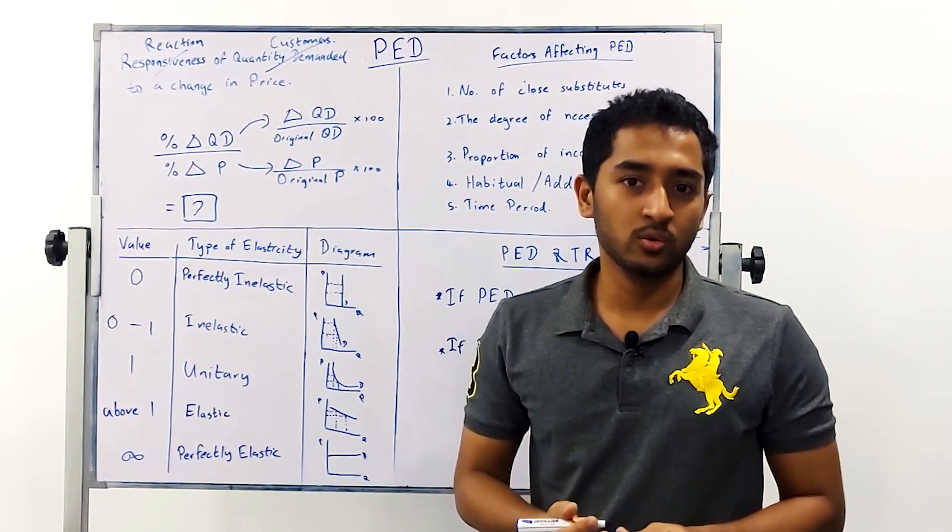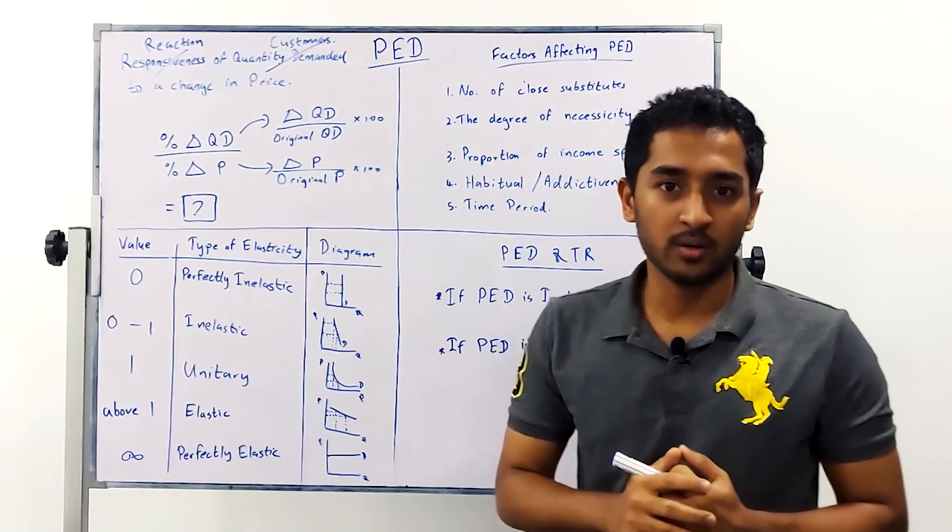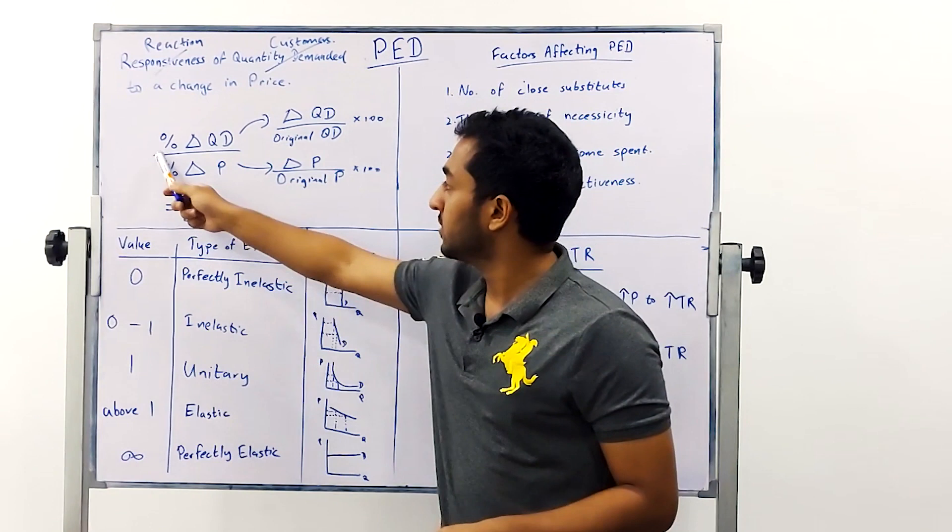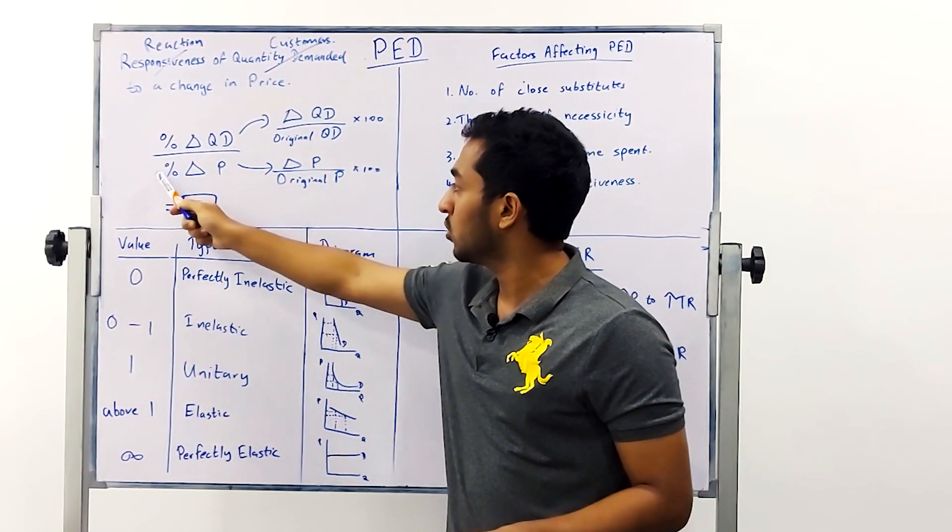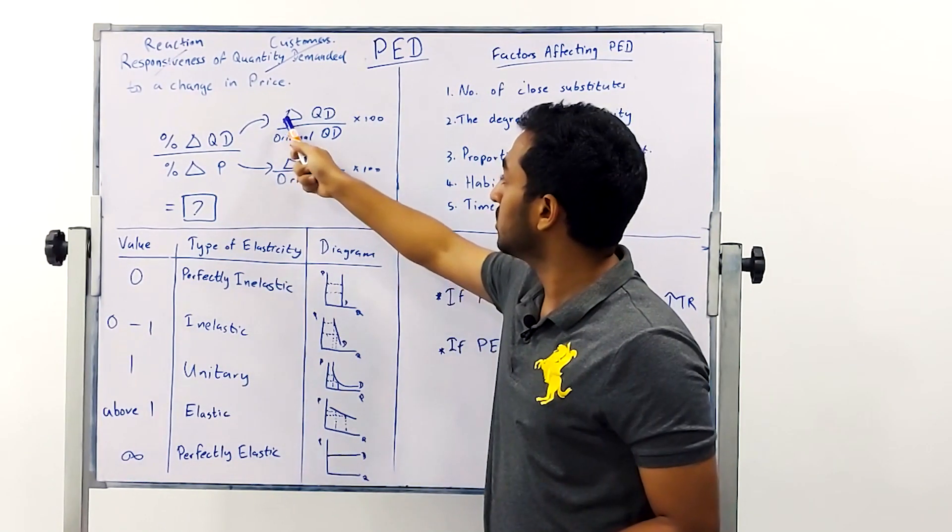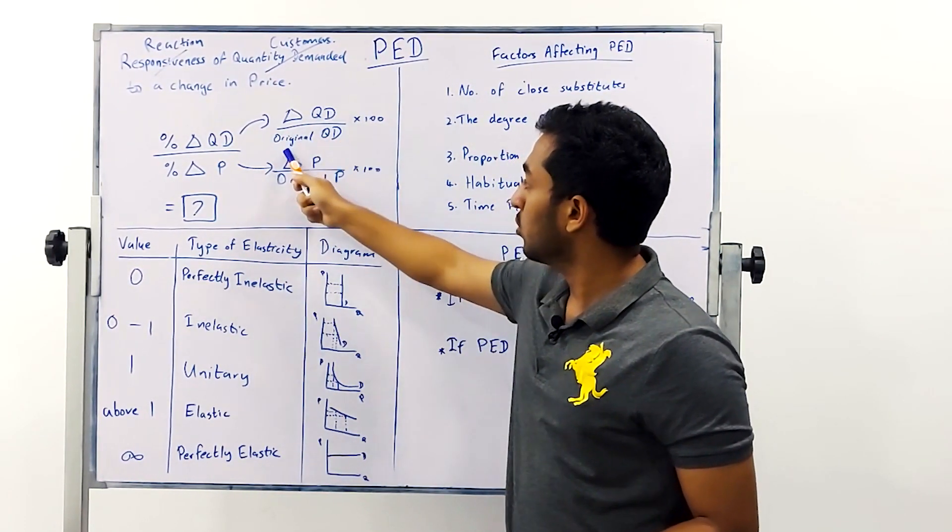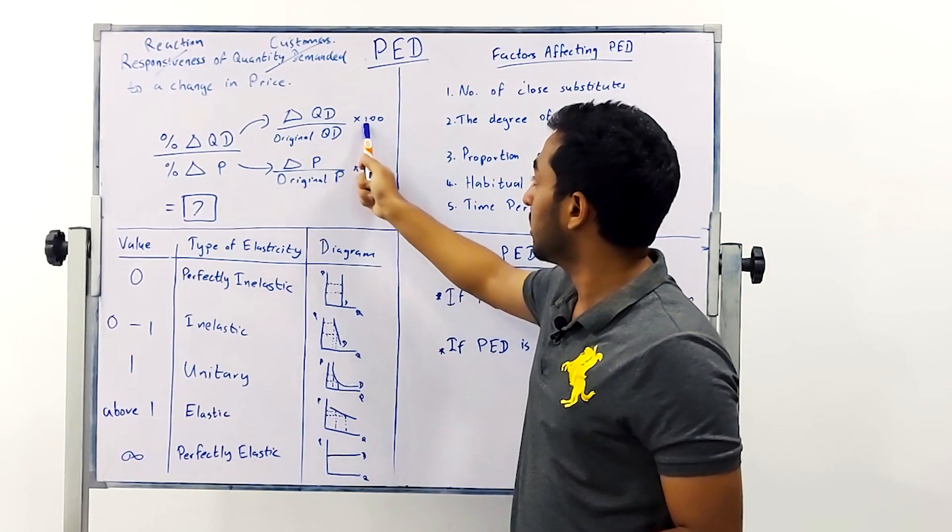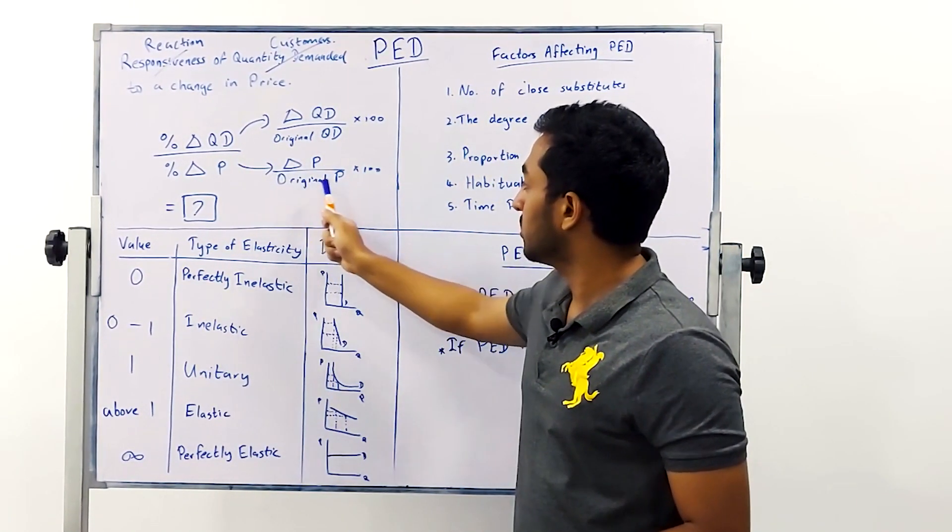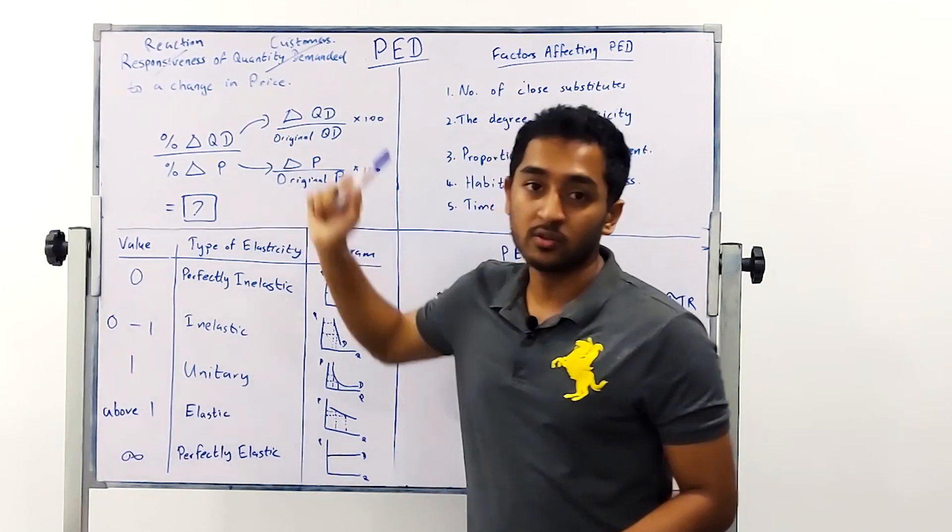For us to figure it out we need to know how to calculate the PED of our product. To calculate the PED you need to figure out your percentage change in quantity demanded over your percentage change in price. Easiest way to do this is to find out your change in quantity demanded over your original quantity demanded multiply by a hundred. You get the figure there. The change in price over your original price times hundred you get the figure over there.